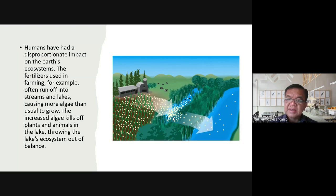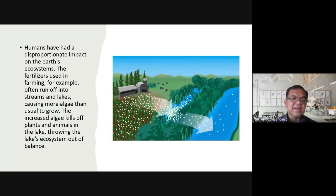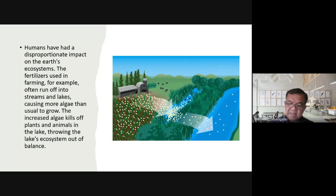Similarly, Laguna Bay has been called the biggest septic tank because all waste flows into it, leading to siltation. The dead water from Laguna Bay flows through Pasig River to Manila Bay. Human activities are the main culprit for the imbalance in that freshwater ecosystem. Human behavior has introduced pollution into the earth's ecosystem through air, water, and soil.